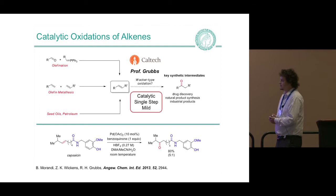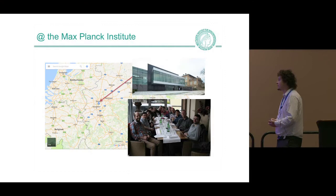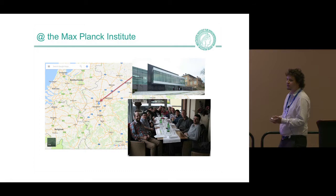After two years of postdoc, I moved back to Germany, to the Max Planck Institute for Kohlenforschung. For those who don't know this institute, this is where Carl Ziegler discovered low-pressure ethylene polymerization — a very important process. There are also remarkable colleagues there, for example Benjamin List, Alois Fürstner, and Tobias Ritter. I had the pleasure to start a lab and grow pretty fast — here you see a picture taken a few months ago.